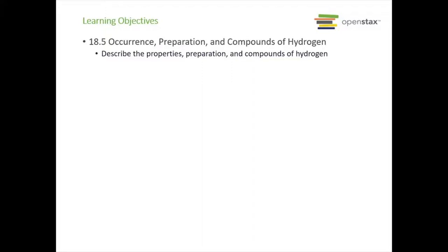Now we're on section 18.5: occurrence, preparation, and compounds of hydrogen. Here we're going to describe the properties, preparation, and compounds of hydrogen.